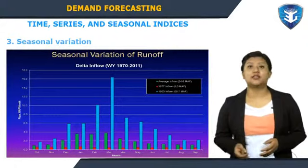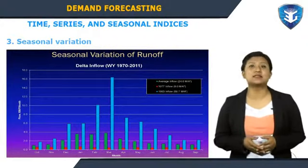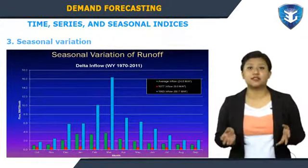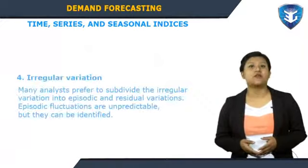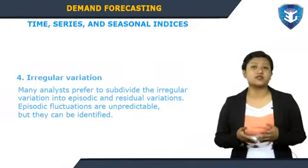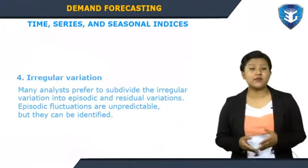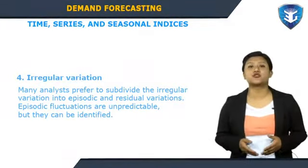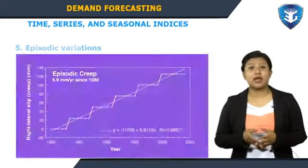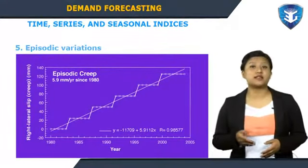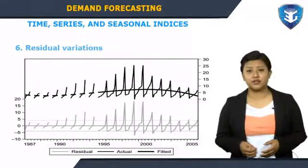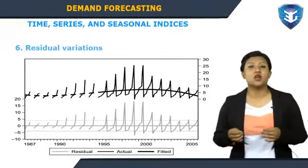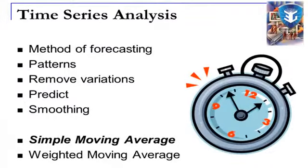Seasonal variation: many sales, production, and other series fluctuate with the seasons; the unit of time reported is either quarterly or monthly. Irregular variation: many analysts prefer to subdivide irregular variation into episodic and residual variations. Episodic fluctuations are unpredictable but can be identified, while residual variations are small random fluctuations that are unpredictable and associated with neither specific events nor cyclical variations. Moving averages are part of time series analysis, applied to data collected at regular intervals.